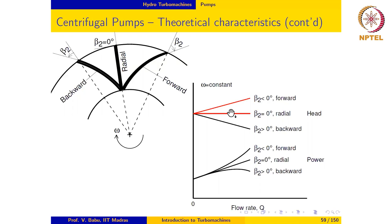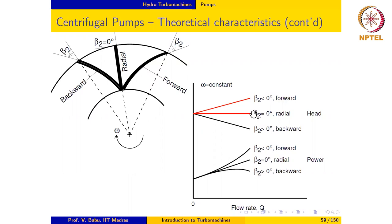We discussed the theoretical characteristics of centrifugal pumps in the previous lecture. The characteristics of a pump with a forward curved blade and a pump with a radial blade are indicated in red color, to distinguish these two designs from the backward curved blade characteristics. This is done primarily because these designs are inherently unstable even to the smallest disturbance in flow rate or input power.